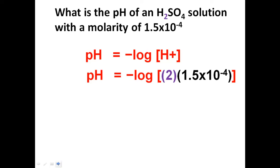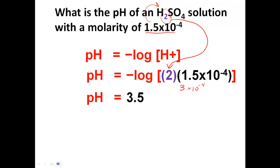You're hitting a home run if you recognized that this is a polyprotic acid — H2SO4. I gave you the solution concentration, not the ion concentration. Since H2SO4 dissociates to produce two hydrogen ions, you double it: 2 × 1.5×10⁻⁴ = 3×10⁻⁴. That is the number you take the negative log of, and you get a pH of 3.5 — back in the ballpark of negative 4.